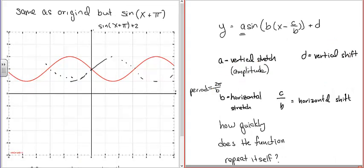So to summarize the transformation terms: a is the vertical stretch and also the amplitude (absolute value of a). d is the vertical shift. b is the horizontal stretch or shrink. The period is 2π over b, the horizontal stretch. The horizontal shift is c/b. This is a repeating function; the period tells you how quickly it repeats, depending on b. To find the exact value, take 2π divided by b.